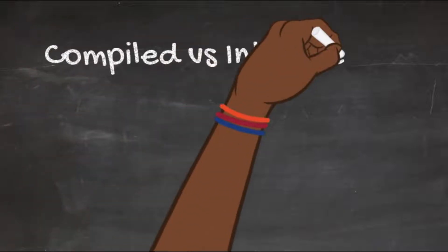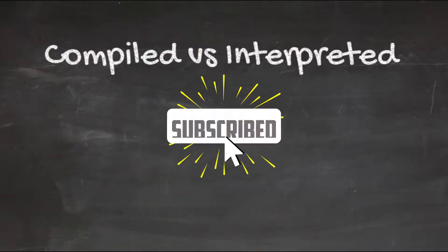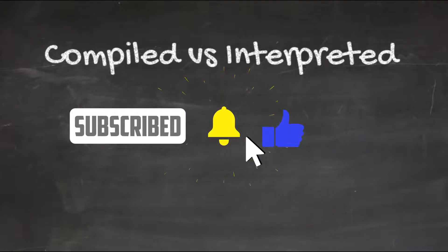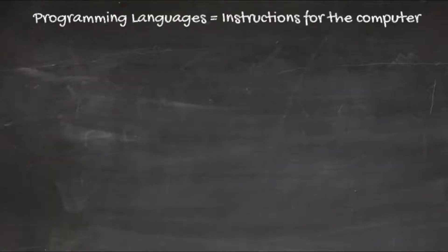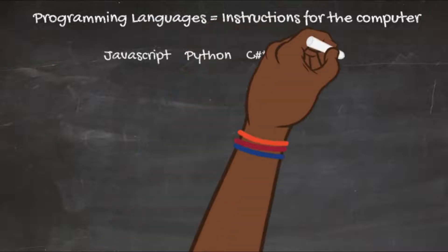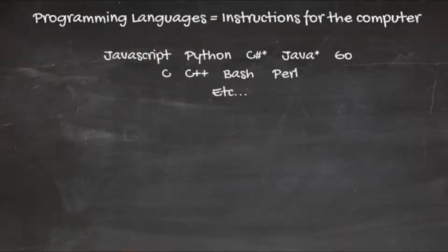Hi everyone, welcome to Esoteric Tech. This video is going to cover the differences between compiled and interpreted languages. Without further ado, let's get started. At this point, hopefully you already understand that programming languages are just instructions to the computer — nothing more, nothing less. Computers do exactly what you tell them to do, and that holds true regardless of what language you choose, whether it's JavaScript, Python, Go, or Bash.